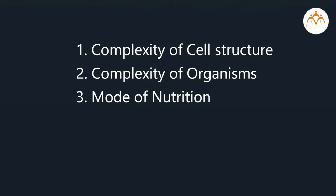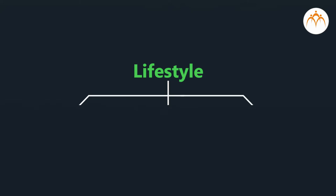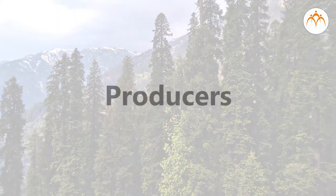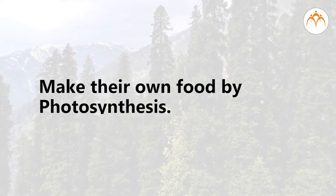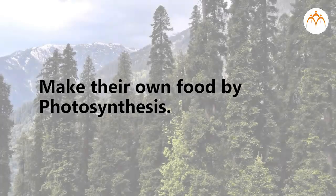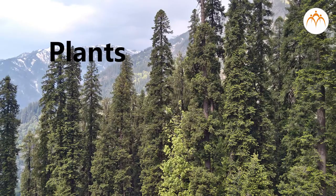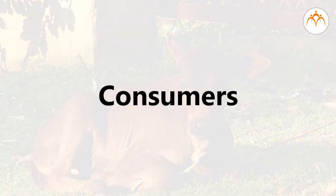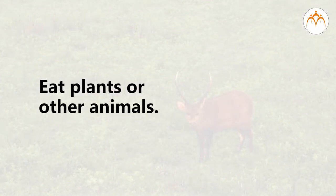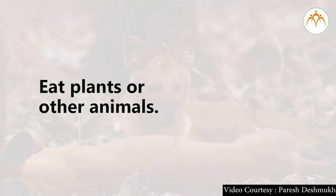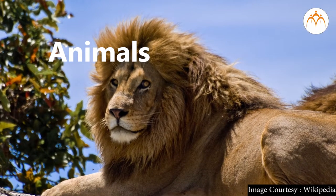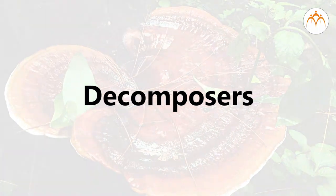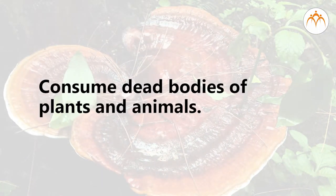The fourth parameter considered was lifestyle. Three types are made in lifestyle. Producers: these organisms make their food by photosynthesis, for example, plants. Consumers: animals which eat plants or other animals are consumers, for example, all animals. Decomposers: they consume dead bodies of plants and animals.